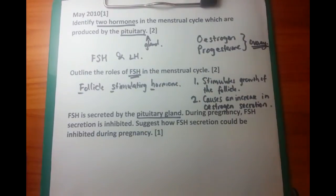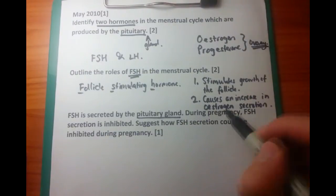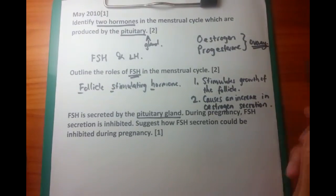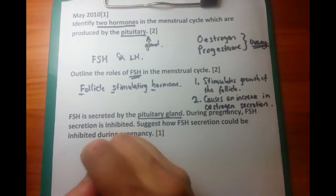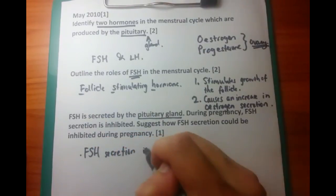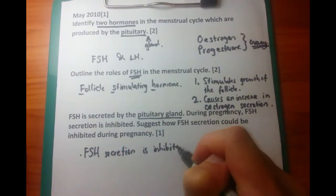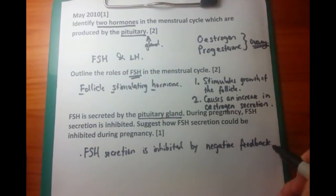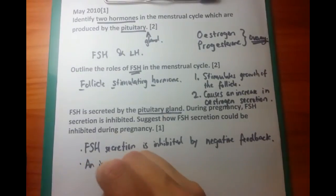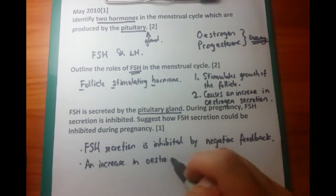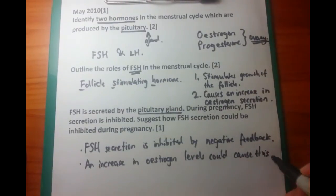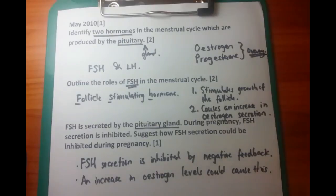Third question: FSH is secreted by the pituitary gland. During pregnancy, FSH secretion is inhibited. Suggest how FSH secretion could be inhibited during pregnancy. With the whole negative feedback system — and negative feedback is a big buzzword to use here — FSH secretion is inhibited because of the increase in estrogen levels, the hormone which occurs after the release of FSH.